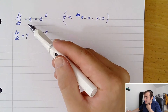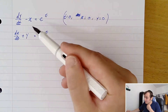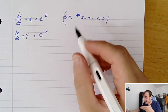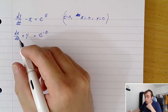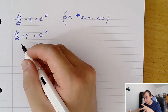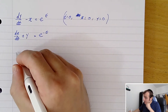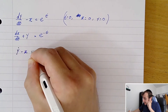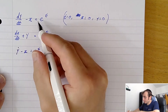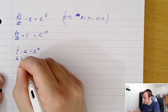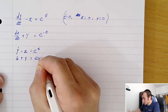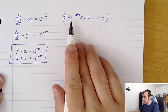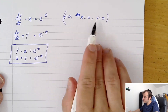Looking at the example, we have dy/dt minus x equals e to the t, and dx/dt plus y equals e to the minus t. We'll write this using dot notation: y-dot minus x equals e to the t for the first equation, and x-dot plus y equals e to the minus t for the second. Our initial conditions are: when t equals zero, x equals zero and y equals zero.